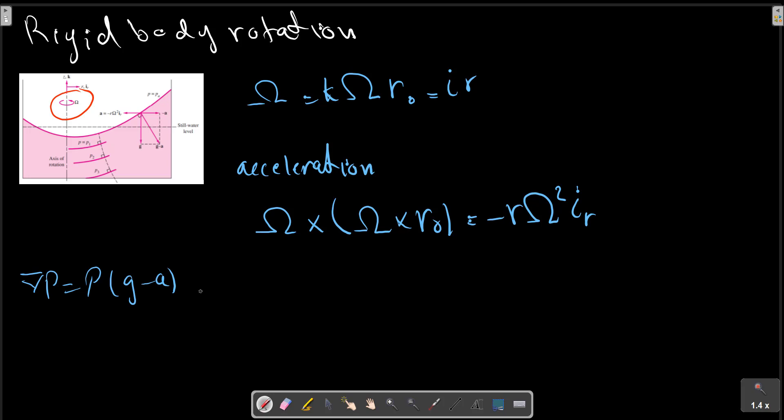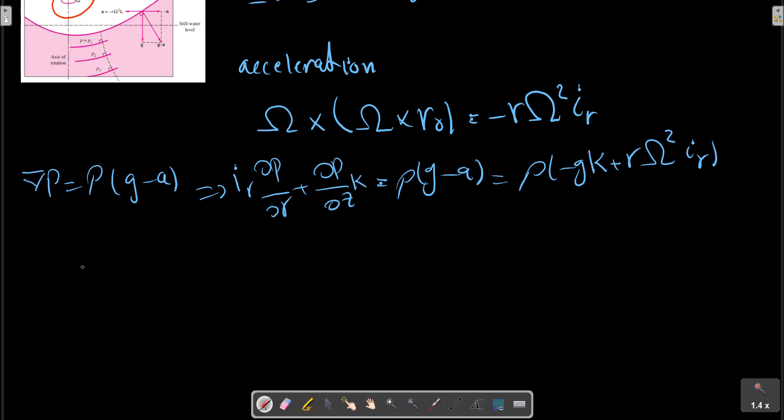We have gradient of pressure equals rho g. In the case of motion fluid, we have gradient of pressure equals rho g minus a. With this relation, equating like components, we find the pressure field by solving two first order partial differential equations.